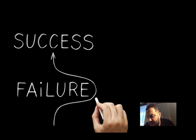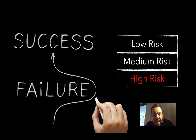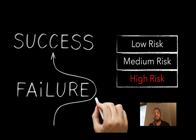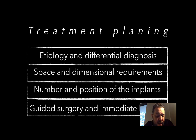Before starting any case, you need to evaluate success and failure factors. I divide patients into low risk, medium risk, and high risk. It's very important to understand and change the patient's habits before treatment. High-risk patients — such as those with periodontitis — are more prone to failure. For example, a patient with periodontitis will often end up with peri-implantitis, so you need to evaluate the risks associated with treatment before starting.